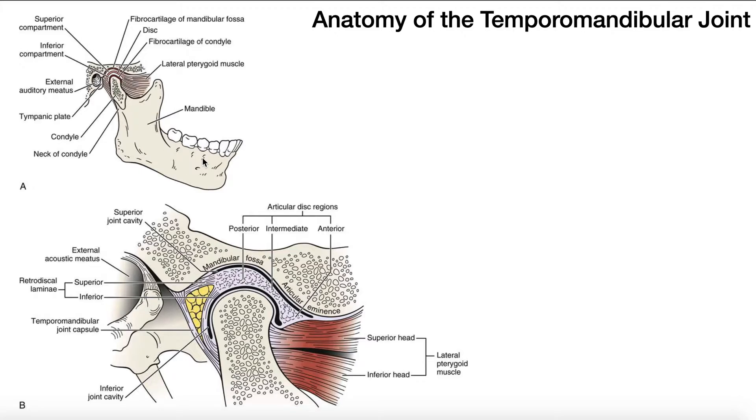Here is the mandible. Over here, anteriorly, this is the coronoid process. The coronoid process is an attachment for the temporalis, but other than that, it plays no role in movements of the jaw. The movements are all actually going to be due to this bone, which is more posterior. This is the mandibular condyle.